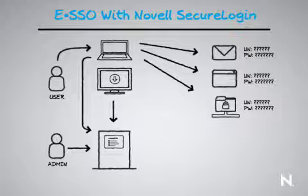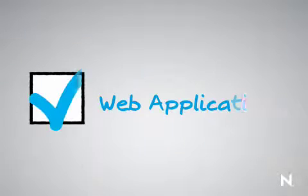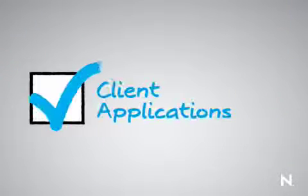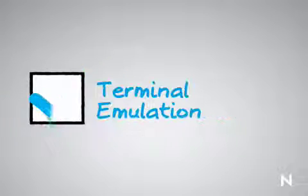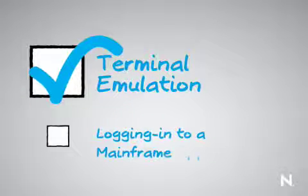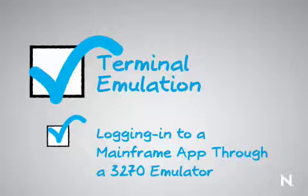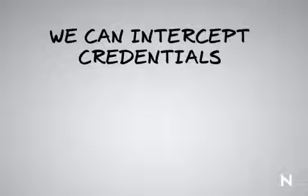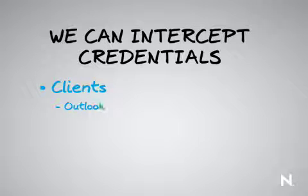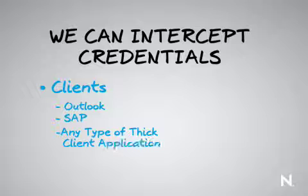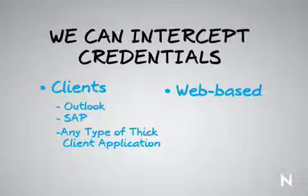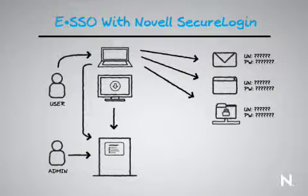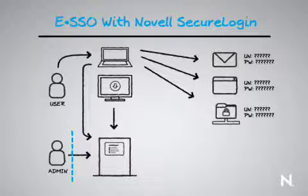And it will do this not only in that format, but for web applications, client applications, and even terminal emulation. If somebody's logging into a mainframe app through a 3270 emulator, it doesn't matter — we can intercept those credentials. We can get them from the client. If they have Outlook, SAP clients, or any type of thick client application, we can intercept that. We can do it for web-based credentials as well. And because of the nature of the way this is architected, even the administrator cannot see those particular secrets — providing a level of trust that is so important in today's environments.